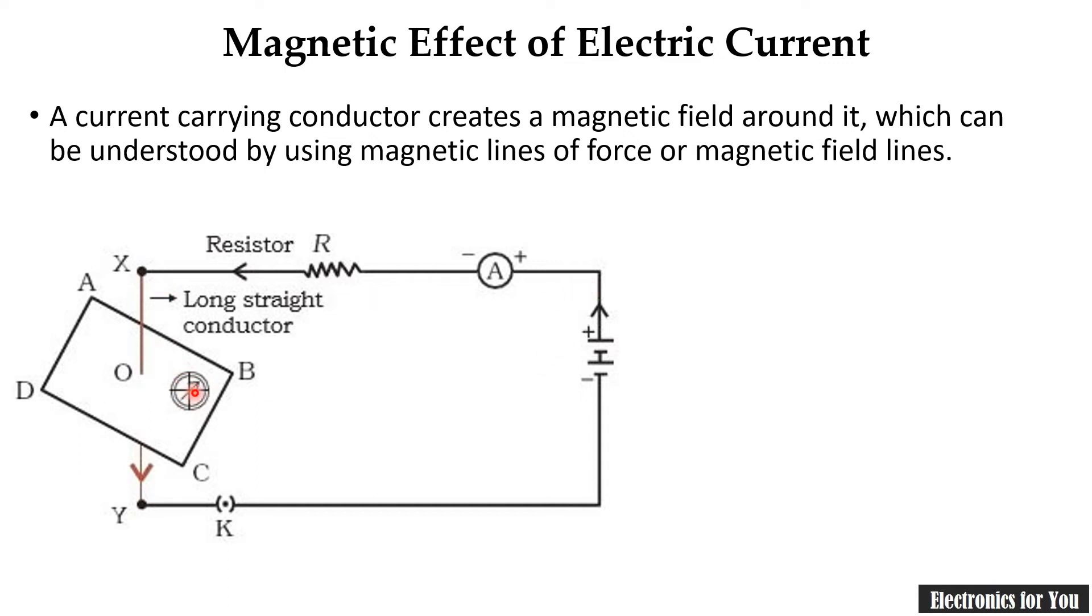If the current starts flowing, this magnet, due to the magnetism in this conductor, as we are saying that, it will generate the magnetic field here. And due to this magnetic field, there is a deflection in this compass. And therefore, this magnet will move and it will indicate that the magnetic field is created here.